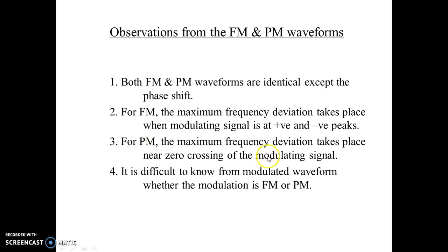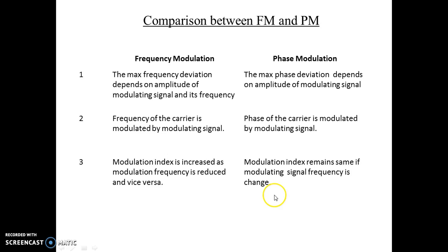In PM, the maximum frequency deviation takes place near the zero crossing of the modulating signal. The phase of the modulating signal changes when the peaks change. It is difficult to distinguish PM from FM just by looking at the modulated waveform. In comparison: for FM, the modulation index increases as the modulating frequency is reduced, whereas for PM, the modulation index remains the same even if the modulating frequency changes.